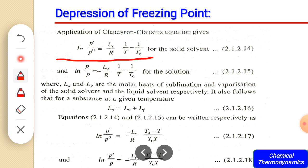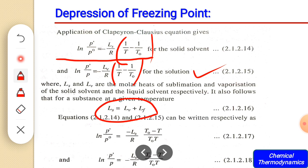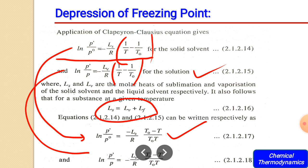For the pure solid solvent we get the equation: ln(P prime / P₀) = −Ls/R × (1/T − 1/T₀), where Ls is the latent heat of sublimation. Similarly for the solution: ln(P prime / P) = −Ls/R × (1/T − 1/T₀). The relationship between latent heat of sublimation, vaporization, and fusion is given by: Ls = Lf + Lv. Modifying these equations by cross multiplication we arrive at a simplified form.